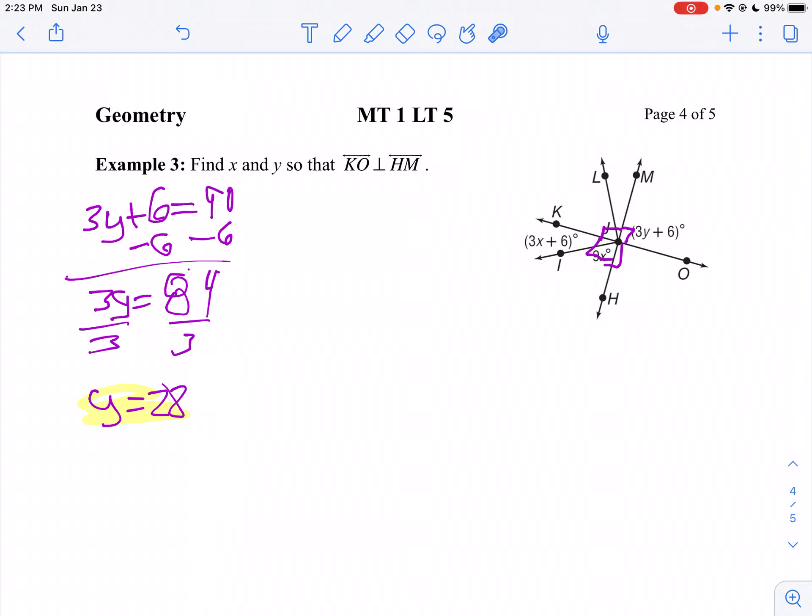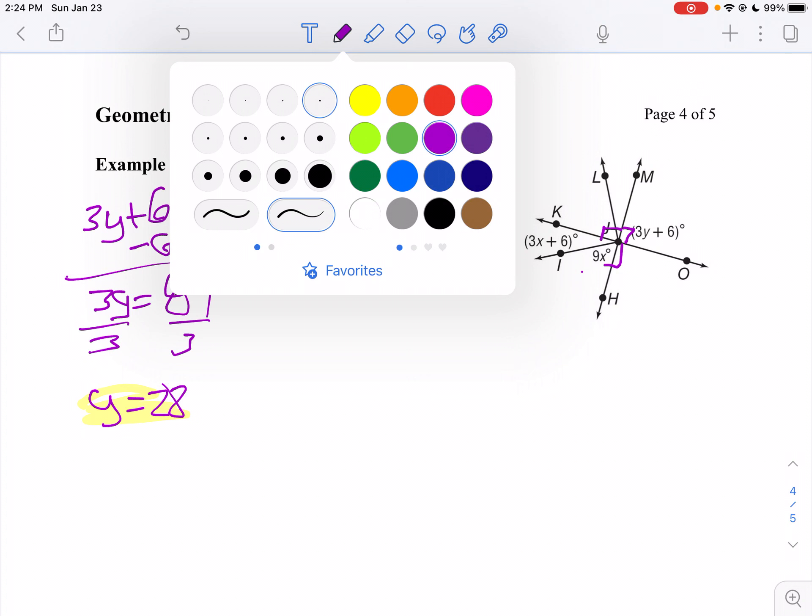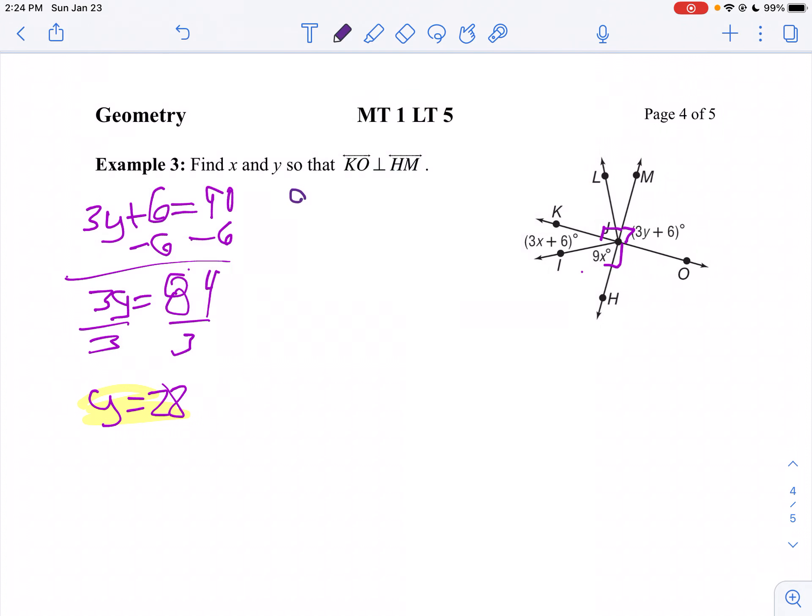I'm going to take off that little marking because it's hard to see. So I know 9X and 3X plus 6 add to 90. I'm going to make an equation: 9X plus 3X plus 6 equals 90 degrees.